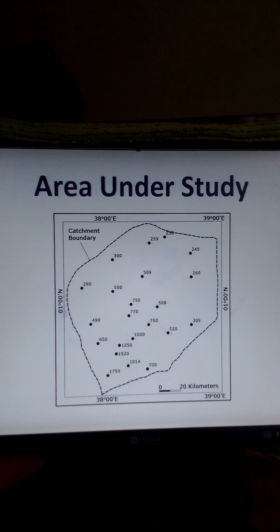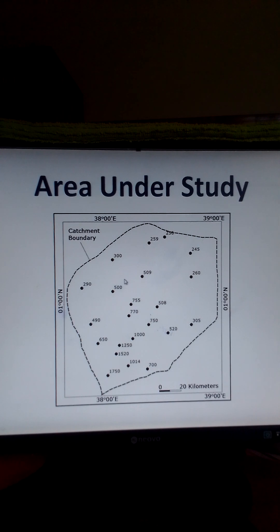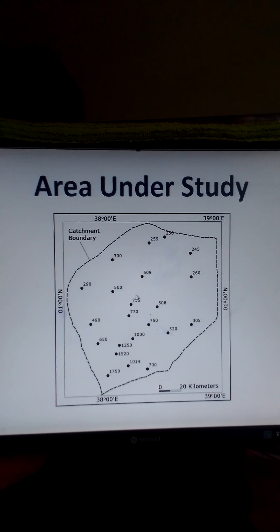In this particular method, we use isohyets and the areas between them. An isohyet is a line joining points of equal rainfall amount on a map. The first thing to do in this method is to draw the area under study to scale, and on that map you mark the location of rain gauges.